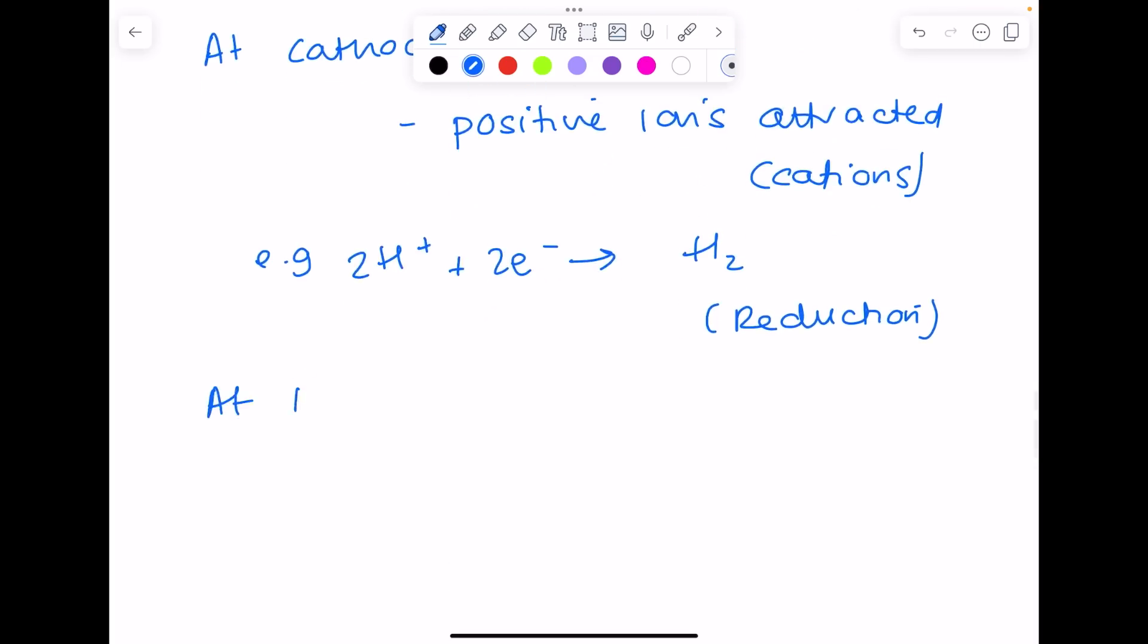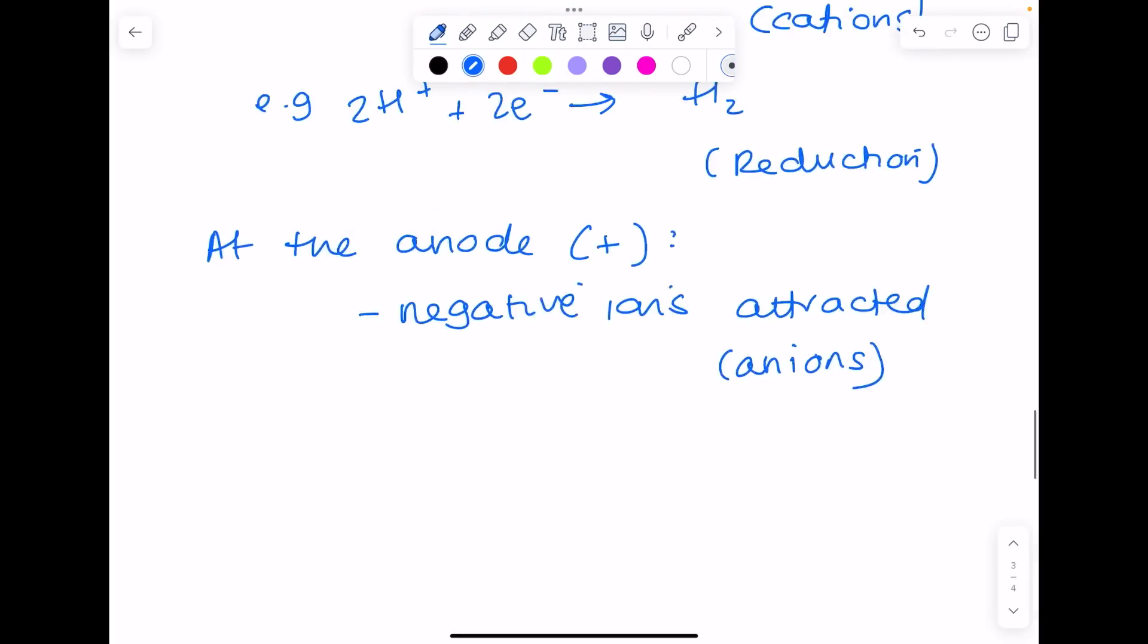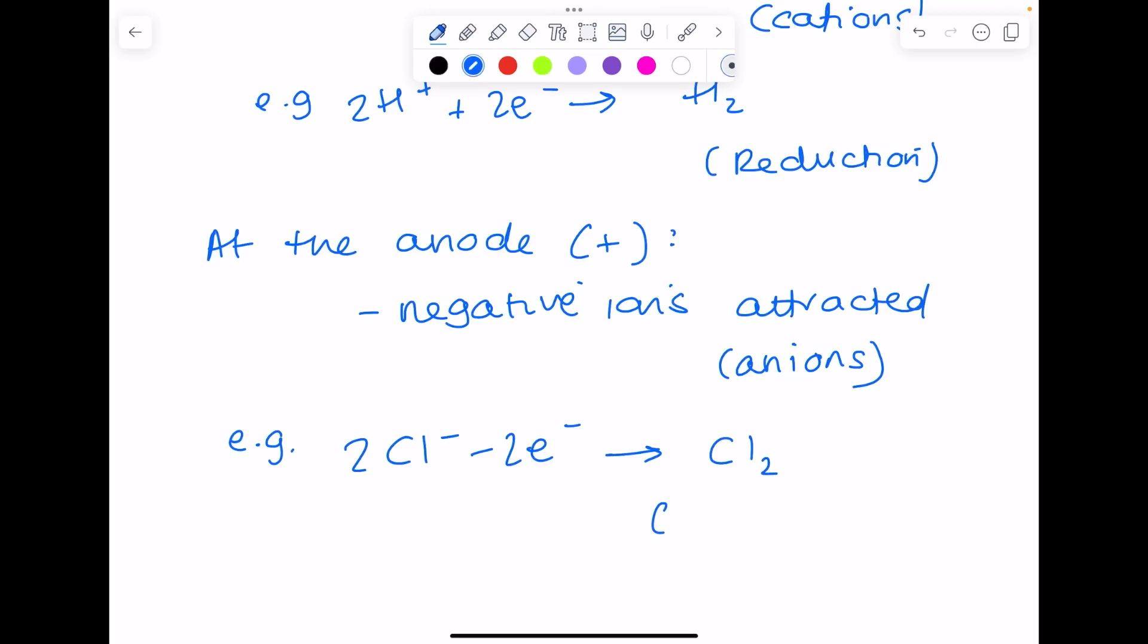At the anode, which is the positive electrode, you're going to have negative ions attracted, which are known as anions. So for example, this sort of reaction, and because we're losing electrons that's an oxidation reaction.